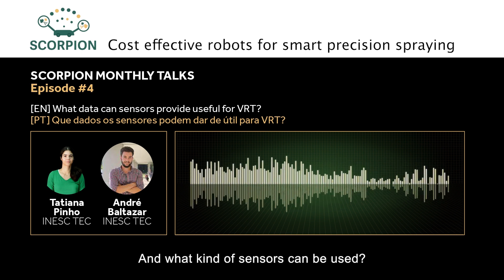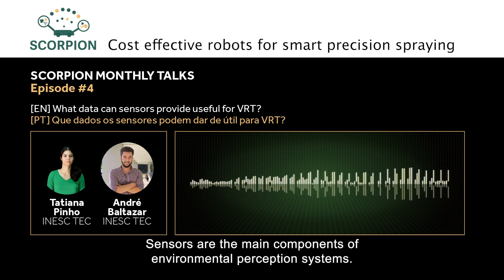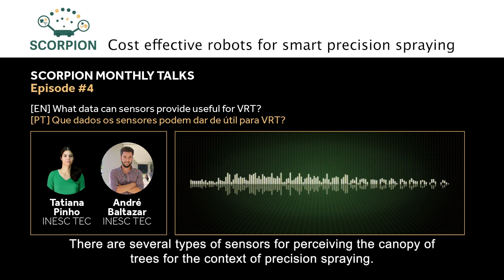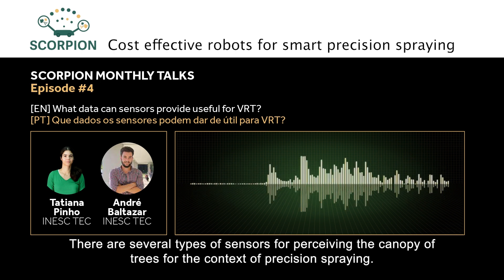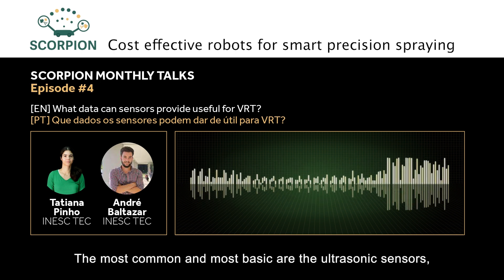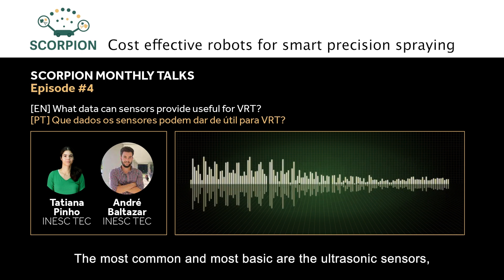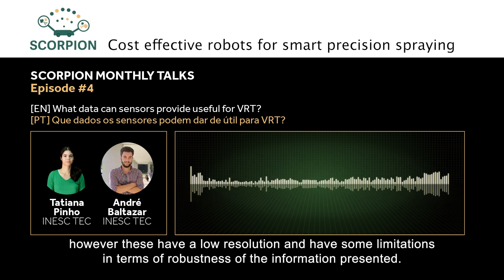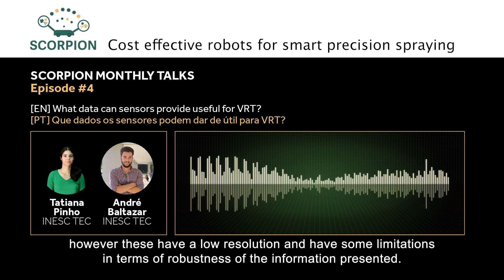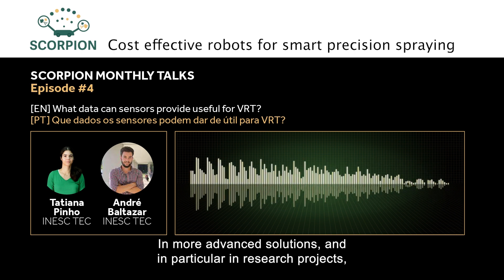And what types of sensors can be utilized? Sensors are the main components of environmental perception systems. There are several types of sensors for perceiving the tree canopy in the context of precision spraying. The most common and most basic are ultrasonic sensors. However, these have low resolution and some limitations in terms of the robustness of the information they provide.